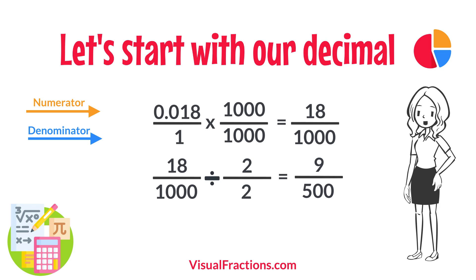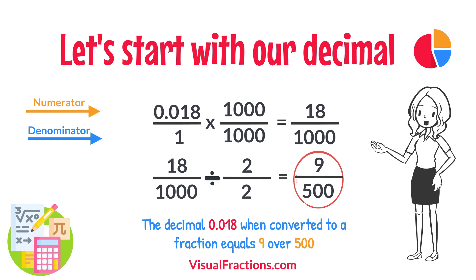So, 18 1,000ths simplifies neatly to 9 over 500. And there you have it. The decimal 0.018 when converted to a fraction equals 9 over 500.